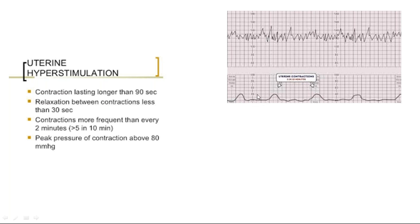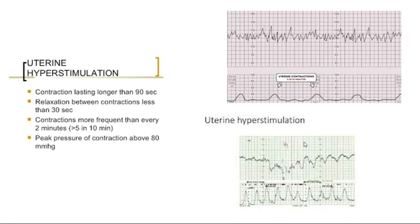In the hyperstimulation graph, too many contractions are occurring, the basal tone is also increased, there is no relaxation between contractions, and you find the fetal heart going down — it has gone down and is picking up again, but decelerations are still present. This is hyperstimulation: called hyperstimulation if the patient is on oxytocin or prostaglandin induction or augmentation of labor, or polysystole if spontaneous.